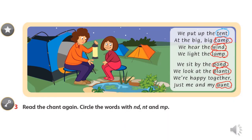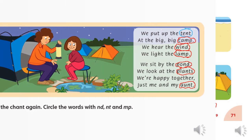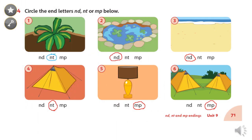Now read the chant again. Circle the words with ND, NT, and MP. Circle the end letters ND, NT, or MP below.